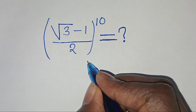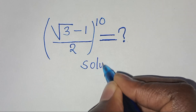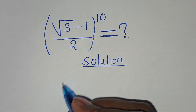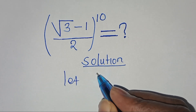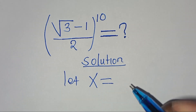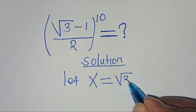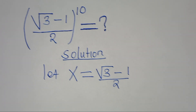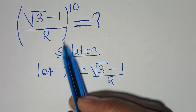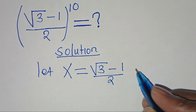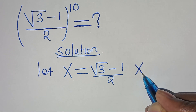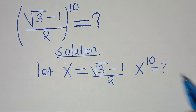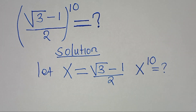Let's present the solution from here. The first thing is we can let x be equal to square root of 3 minus 1 divided by 2. Substituting x into this math problem, this implies that we solve for x raised to the power of 10.